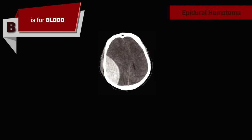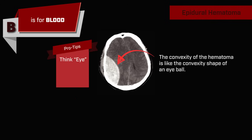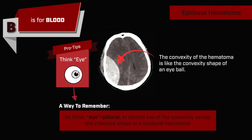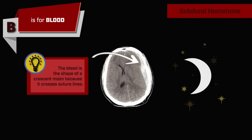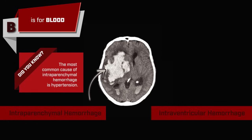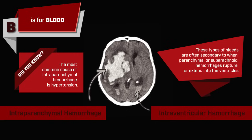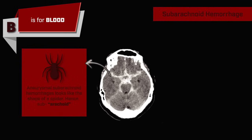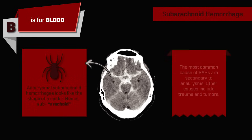Look for things like epidural hematomas, subdural hematomas, intraparenchymal hemorrhages, intraventricular hemorrhages, and subarachnoid hemorrhages.